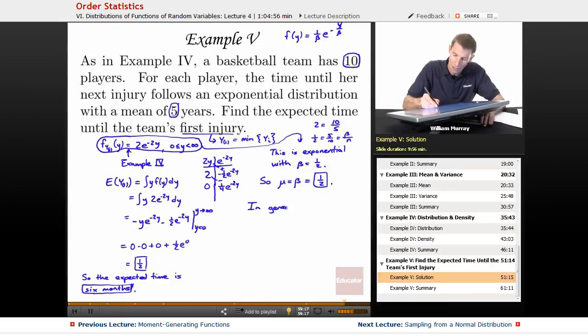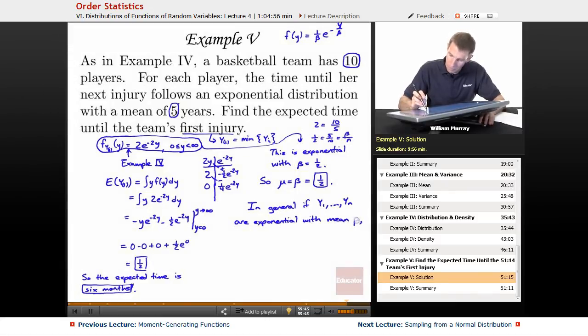So that one half in turn came from the five divided by the 10, which in turn the five was the beta, the mean of the original distribution, and 10 was the number of players, so beta over n. In general, if y1 through yn, I'm going to try to write this in general here without making reference to specific numbers. In general, if y1 through yn are exponential with mean beta, then y1, the minimum of the yi's, the minimum of y1 through yn is exponential.